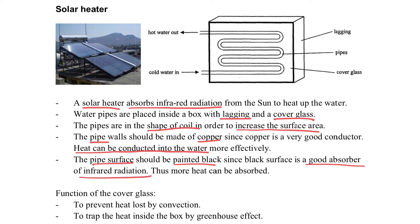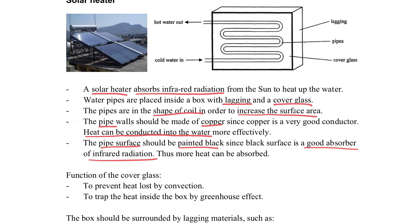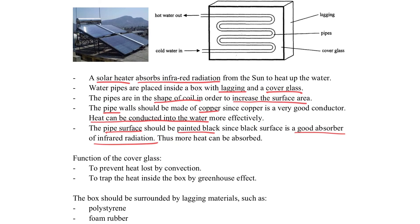It can absorb the radiation effectively by using dark color to design it. We will use the cover glass and the lagging so that it can absorb heat more effectively and trap the heat inside. The coil shape will also be able to increase the surface area in order to enhance the heat absorption.